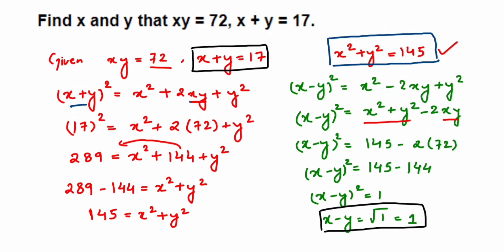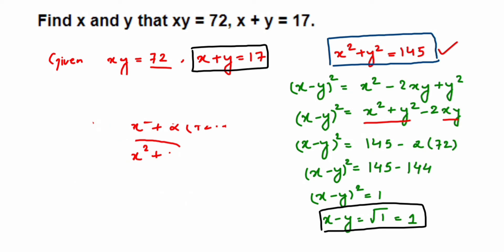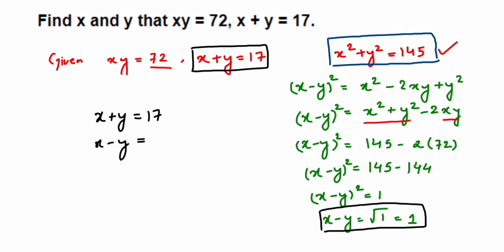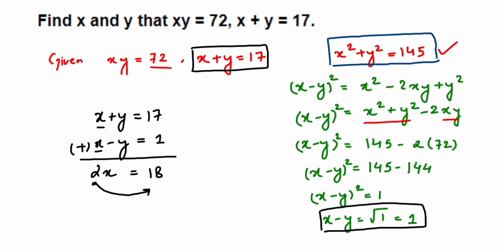Using these two equations — x + y = 17 and x − y = 1 — I'll add them using the column method. Adding: x + x = 2x, and y − y cancels to 0. So 2x = 17 + 1 = 18. Transposing: x = 18 ÷ 2 = 9. Therefore x = 9.